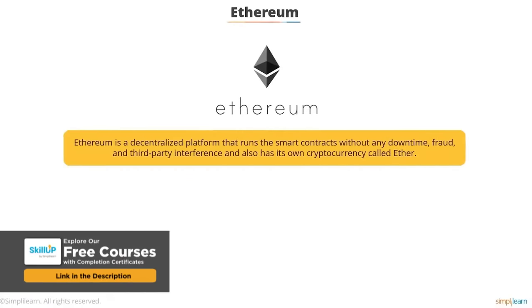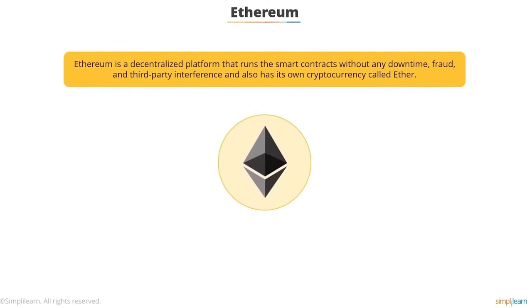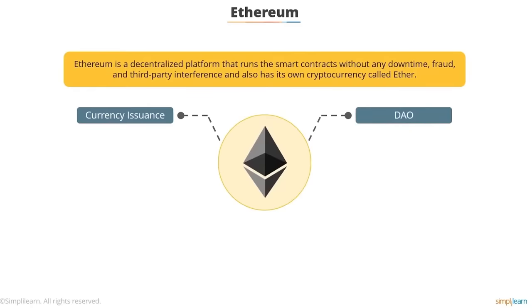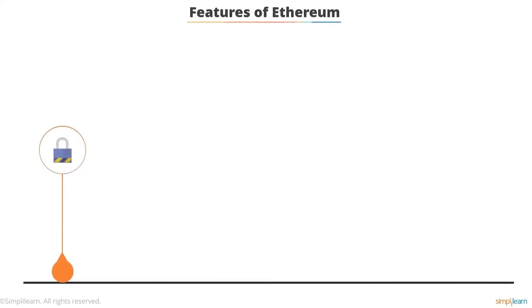Ethereum and its concepts: while Bitcoin is defined as digital money, Ethereum is a decentralized platform that runs smart contracts exactly the way they are programmed — without any downtime, fraud, or third-party interference — and also has its own cryptocurrency called Ether. Ethereum aims to enable innovations in three key areas: currency assurance through Ether (which serves as innate currency for the Ethereum blockchain), decentralized autonomous organizations, and smart contracts. The first feature of Ethereum is that it is secure — it is almost impossible to tamper with transactions in the block or add fraudulent blocks.